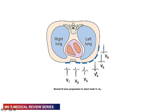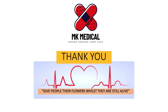Here's a diagram to illustrate this. As you can see, in V1 and V2 the QRS complex is predominantly negative. In V3 and V4 the QRS complex is roughly the same size, with the transition point occurring around V4. Then in V5 and V6 the QRS complex is predominantly positive. That is how we check for RS wave progression on the ECG.